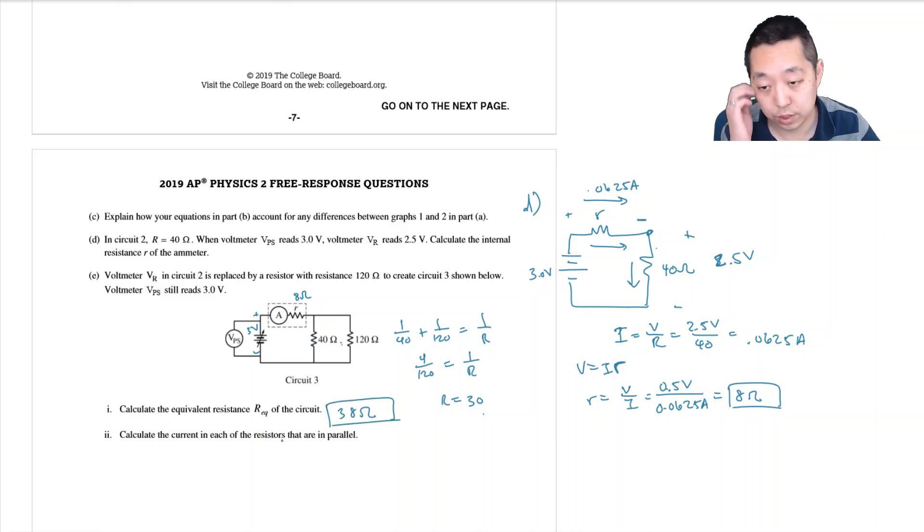And calculate the current in each of the resistors that are in parallel. The simplest way to do this is to say like well how much current is flowing totally through the circuit. The I is equal to V over r and it's 3 volts divided by the total resistance 38, and that's 0.0789 amps. So that's the total current that's flowing through here.